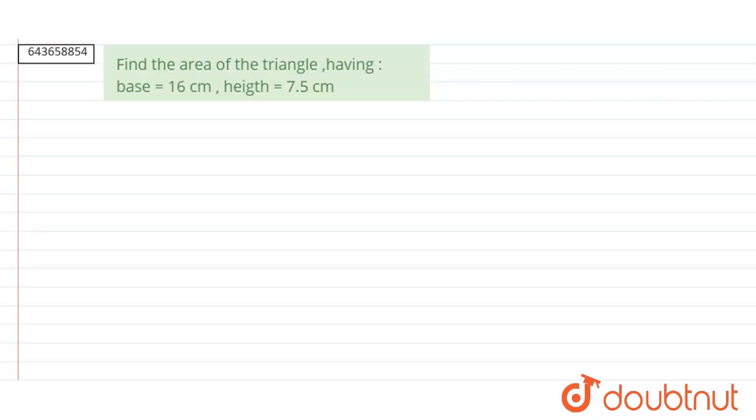The question is find the area of the triangle having base equals to 16 cm and height equals to 7.5 cm.